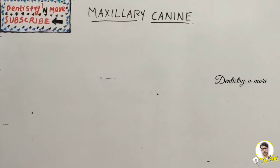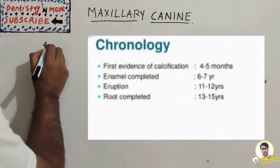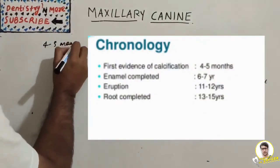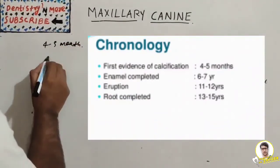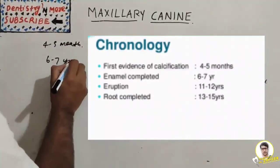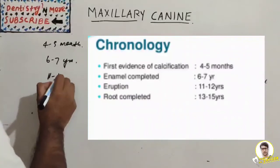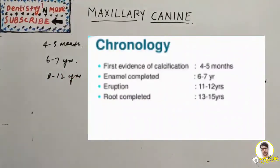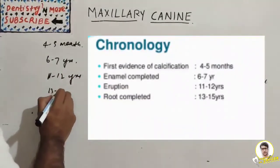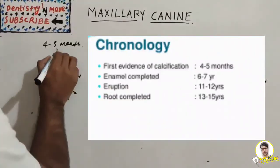Regarding chronology: the first evidence of calcification is at 4 to 5 months, enamel completion by 6 to 7 years, eruption by 11 to 12 years, and root completion by 13 to 15 years.